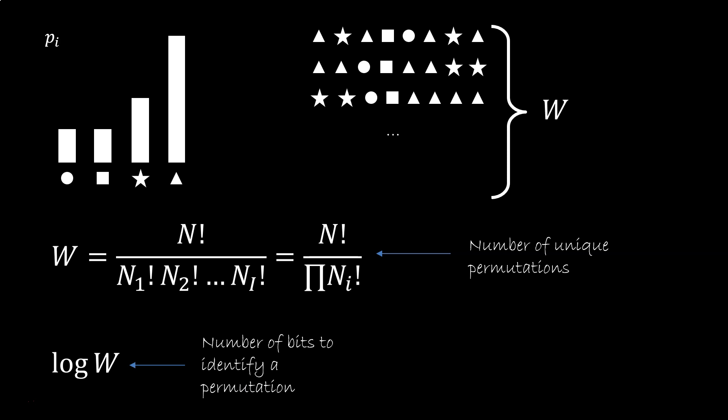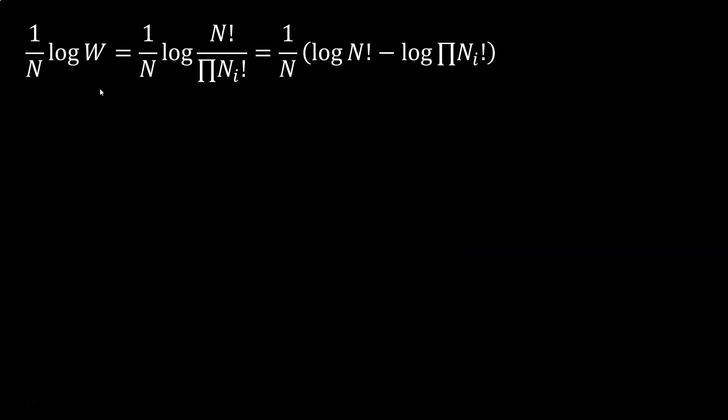Since W will increase with the number of elements, we can divide by N and have the average number of bits per element. We take 1 over N log W, and substitute W. The ratio in the log becomes the difference between the logs.